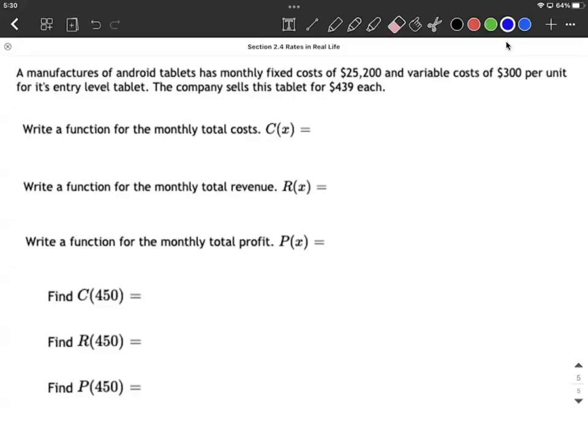Okay, we're given a word problem. This one's about Android tablets. A manufacturer of these Android tablets has monthly fixed costs of $25,200 and variable costs of $300 per unit for its entry level tablet.